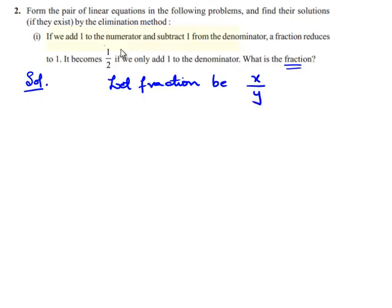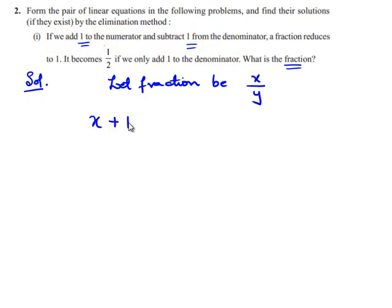Let us first see the first condition: when 1 is added to the numerator and 1 is subtracted from the denominator, the fraction reduces to 1. Our assumption of the fraction is x by y. So when we add 1 to the numerator it becomes x plus 1, and when we subtract 1 from the denominator it becomes y minus 1. This is equal to 1 according to the given problem.